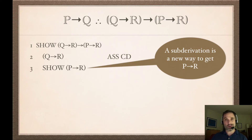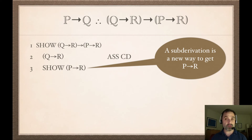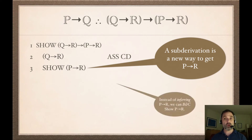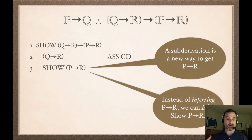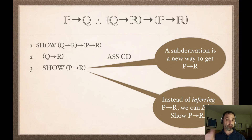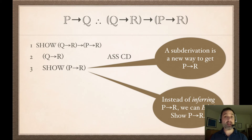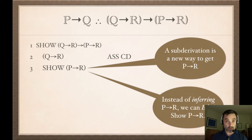Fundamentally, a sub-derivation is something you want to get, and one way to get it is using inference rules. The other way is to use a sub-derivation, because once you've completed it you'll have 'if P then R.' So there are two ways to get a sentence: one is to infer it; the other is to box and cancel a show line that contains it. Those are the two fundamental ways to get new things into your derivation beyond the premises.